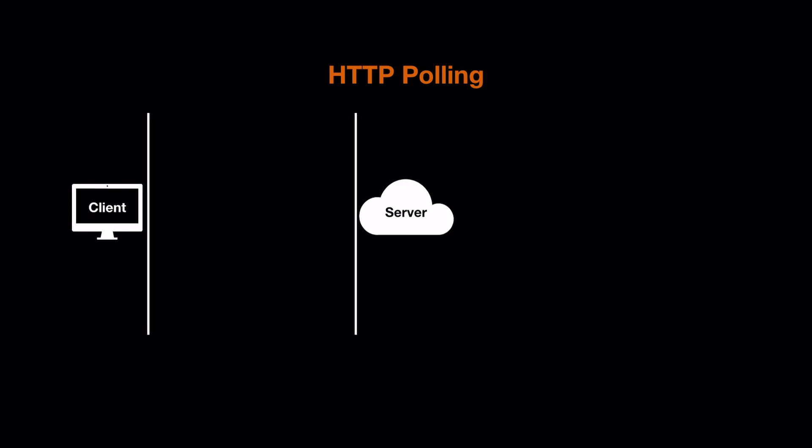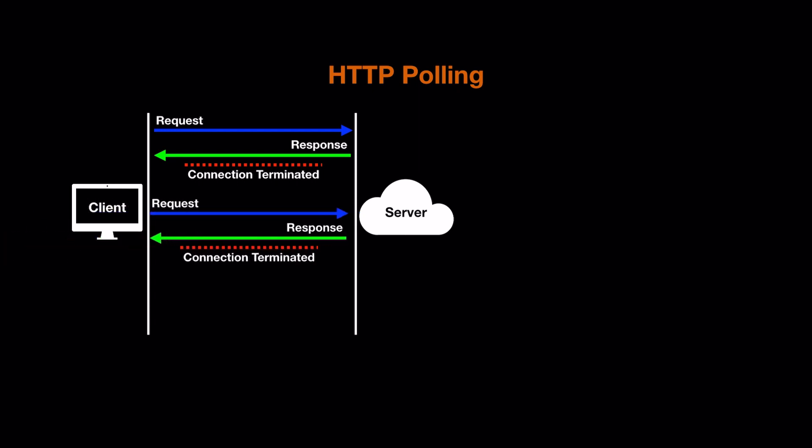Let's talk about HTTP polling. The client sends a request to the server asking, 'do you have any data for me?' If the server has data it sends it back; if not, it sends an empty response and the connection is closed. After some time the client asks again, and this keeps repeating until eventually the server has data and sends it back.